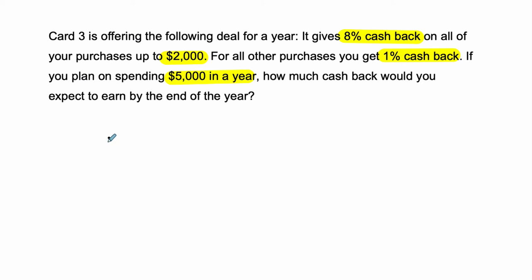So, you're going to get 8%. That's 8%, of course, is just 8 divided by 100, which is 0.08, all the same thing, times not the full $5,000, but the first $2,000 that you spend. So, it's $2,000.